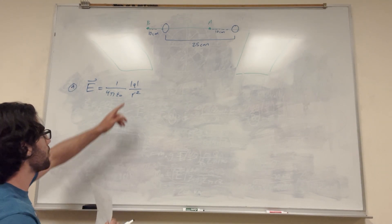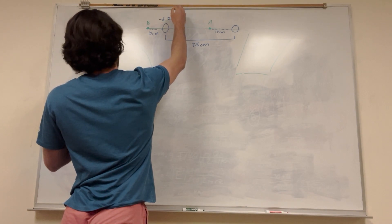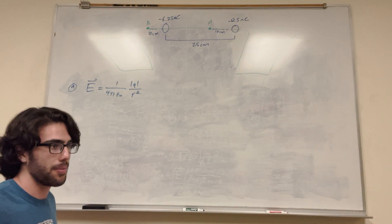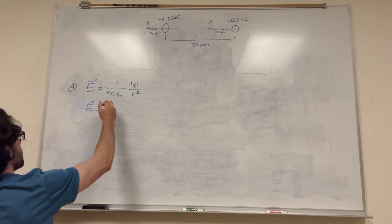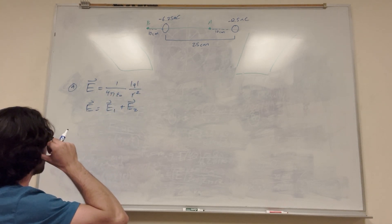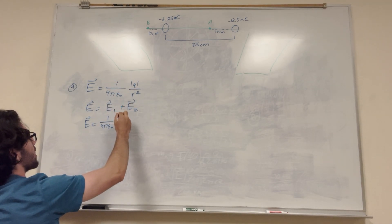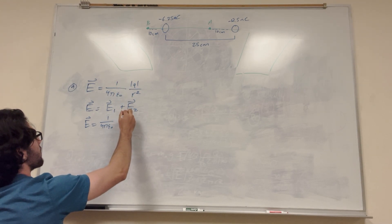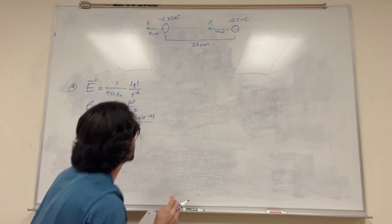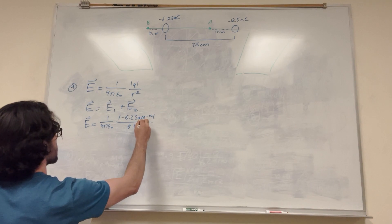When we have multiple charges and we're looking at point A, there's going to be two charges. This one is negative 6.25 nanocoulombs, and this one is negative 12.5 nanocoulombs. So you're going to need to sum them together: E is equal to the electric field from the first one plus the electric field from the second one. So our equation is going to be 1 over 4 pi epsilon naught, times the magnitude of negative 6.25 times 10 to the negative 9, over radius squared. If we're looking at A, the radius is 25 centimeters minus 10 centimeters = 15 centimeters, or 0.15 meters squared.